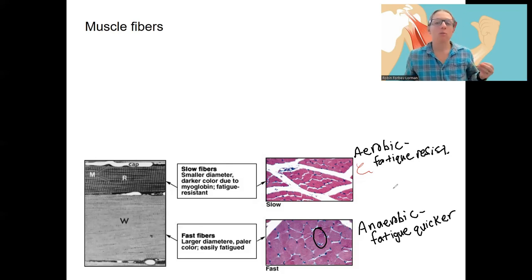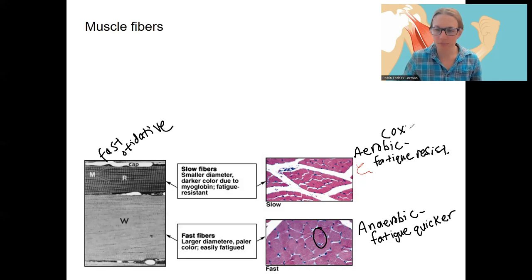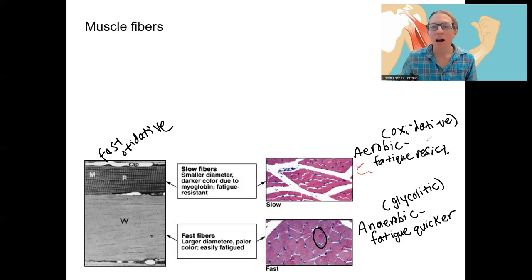So those are the two big classifications. There are fibers that are fast oxidative. So oxidative, that means aerobic. And anaerobic, the other word for that is glycolytic. So breaking down glucose, glycolytic. Oxidative fibers also break down glucose. They don't just do that. They also use oxygen. So oxidative versus glycolytic. Lytic means like to lyse.